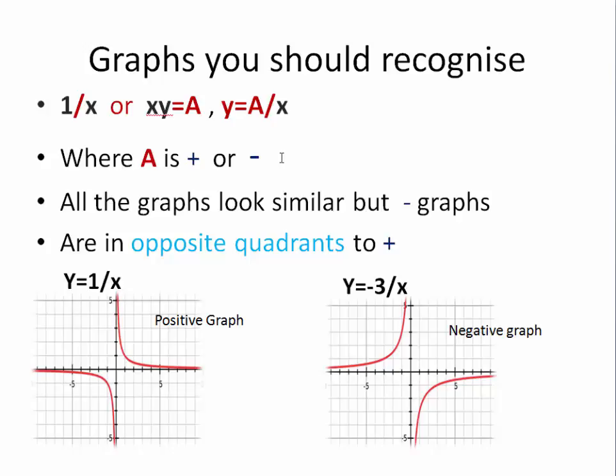Here we have a reciprocal. 1 over x. And these are different ways of writing it. Wherever these graphs, these graphs all look similar. But the minus graphs are in opposite quadrants to the positive graphs. So there will always be this kind of curved shape in quadrant one and quadrant three, if it's a positive equation. And if it's a negative, the opposite quadrants. The smooth curve shape which looks similar whatever the number over the x.